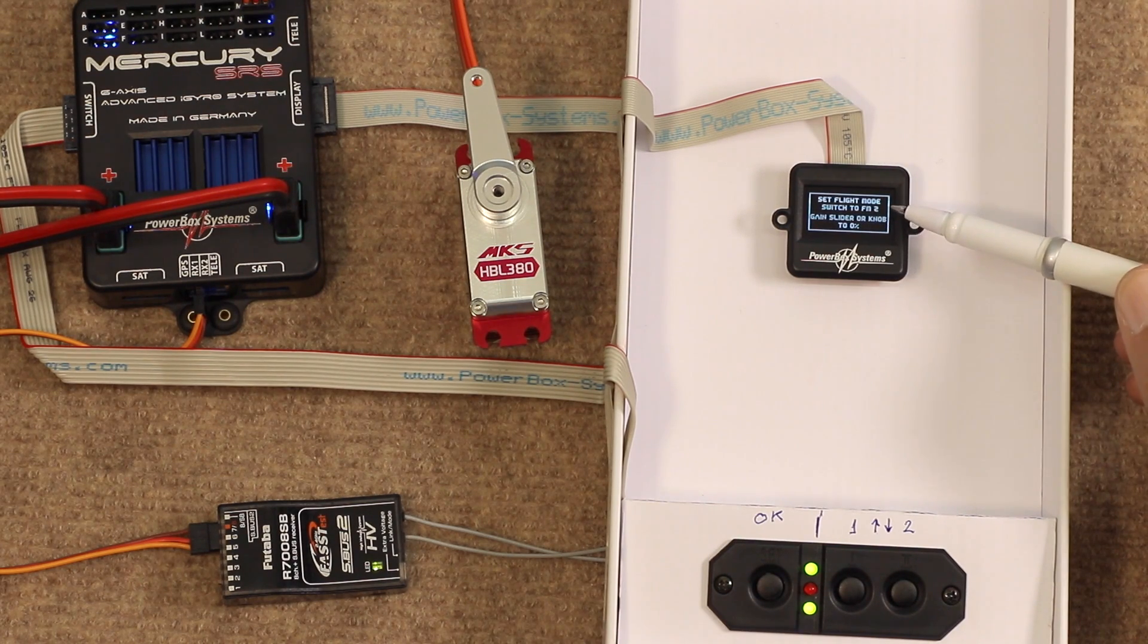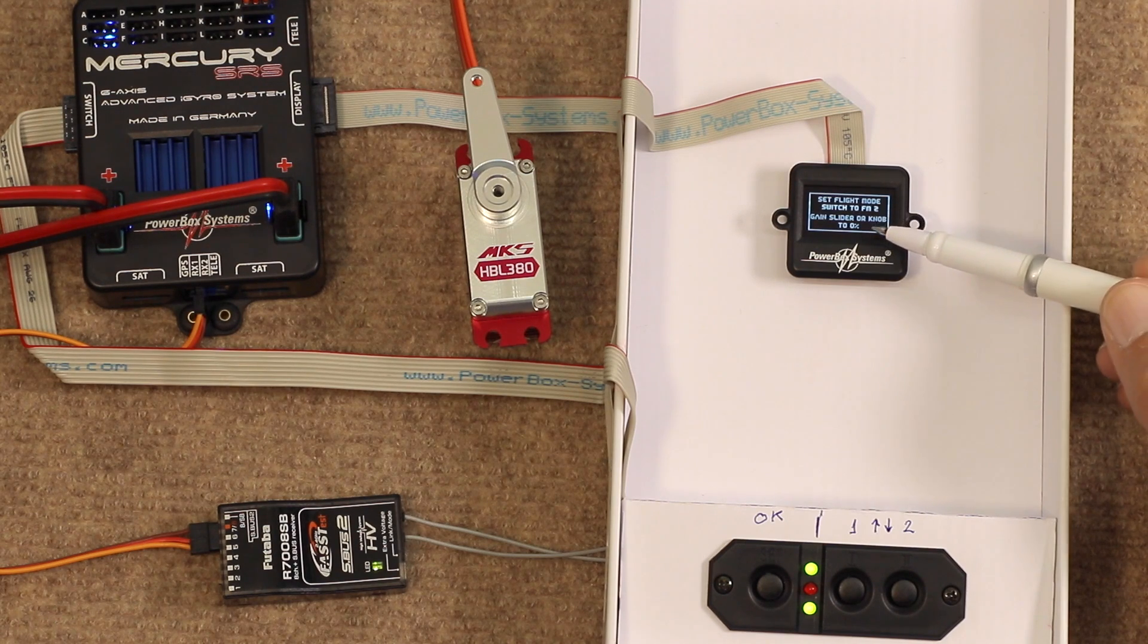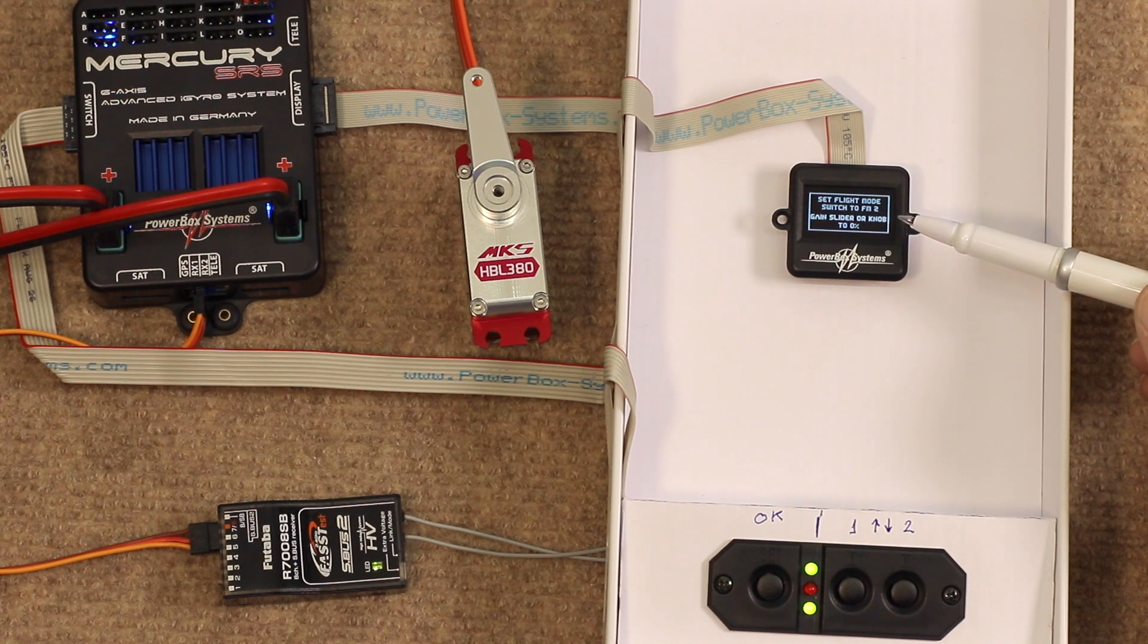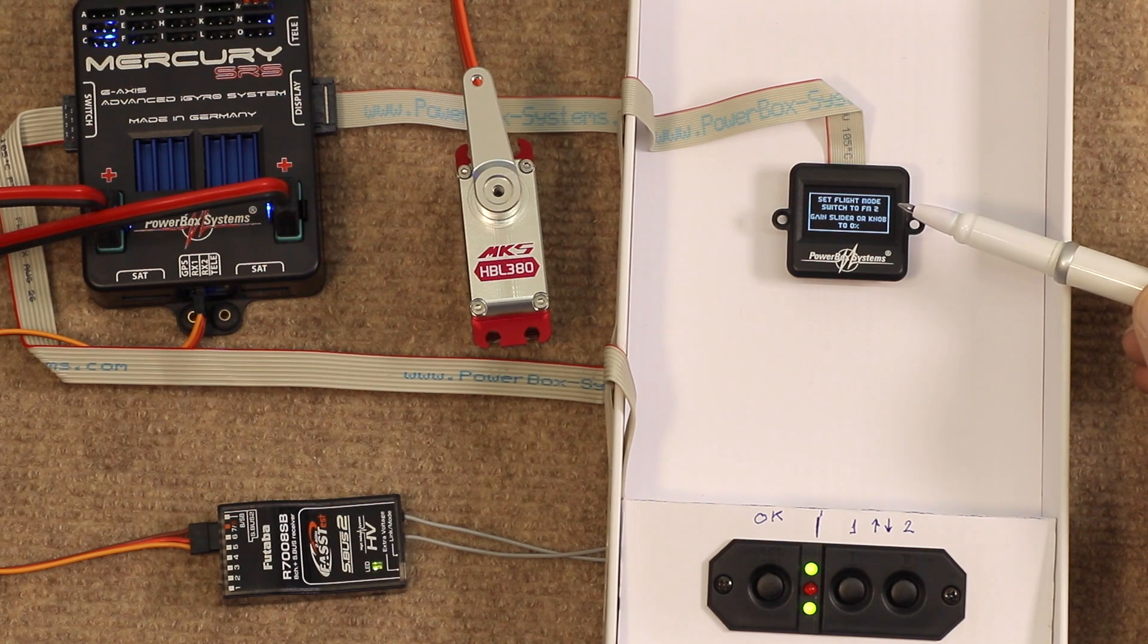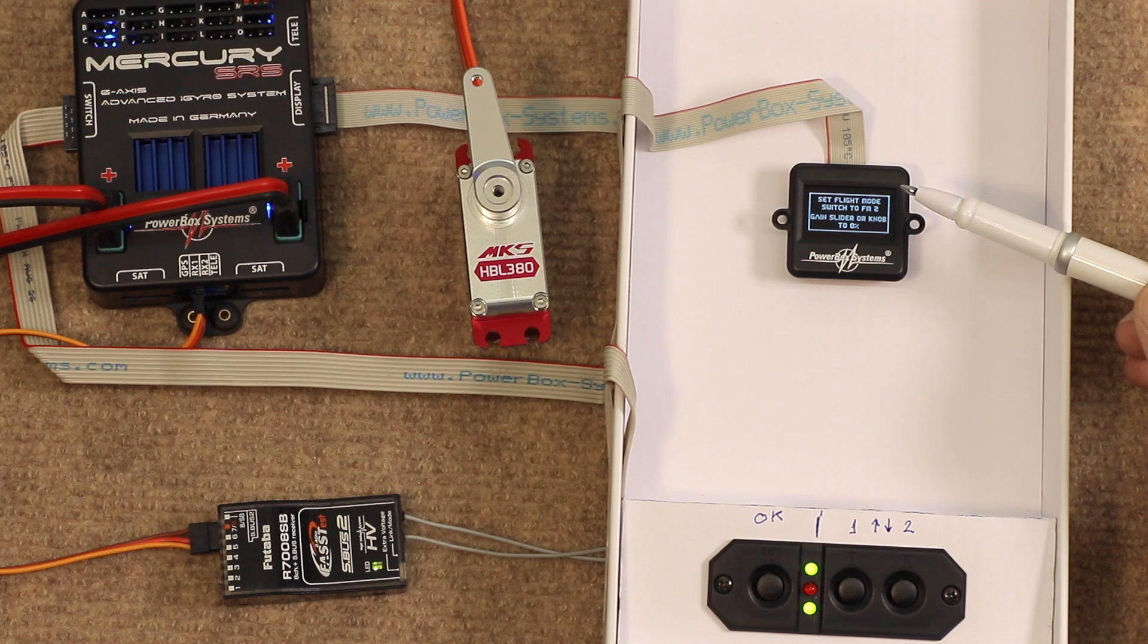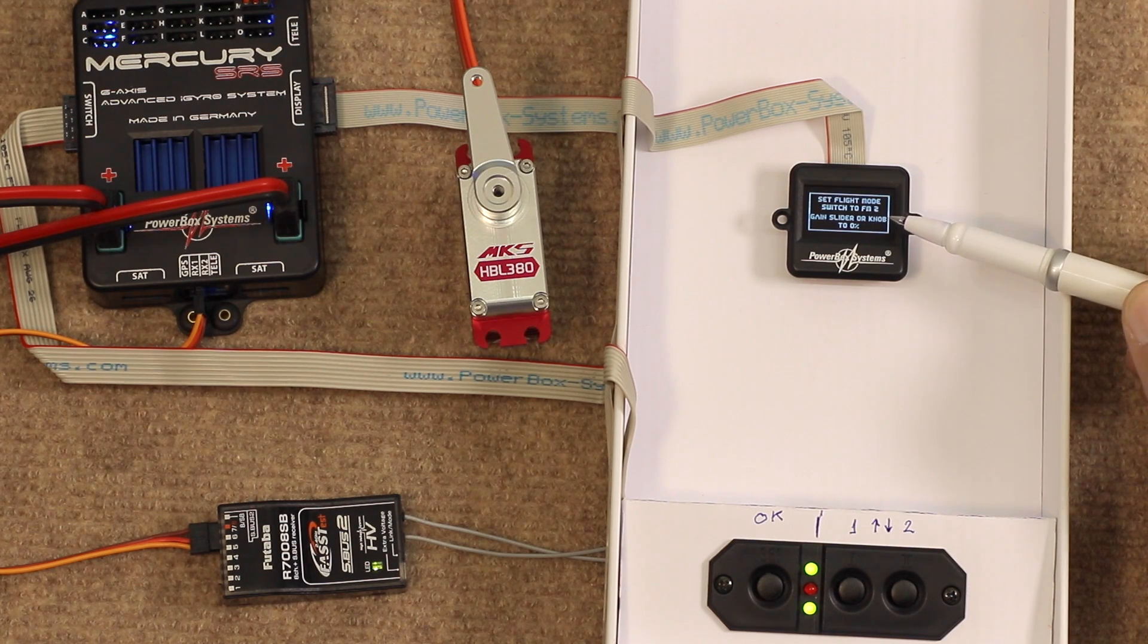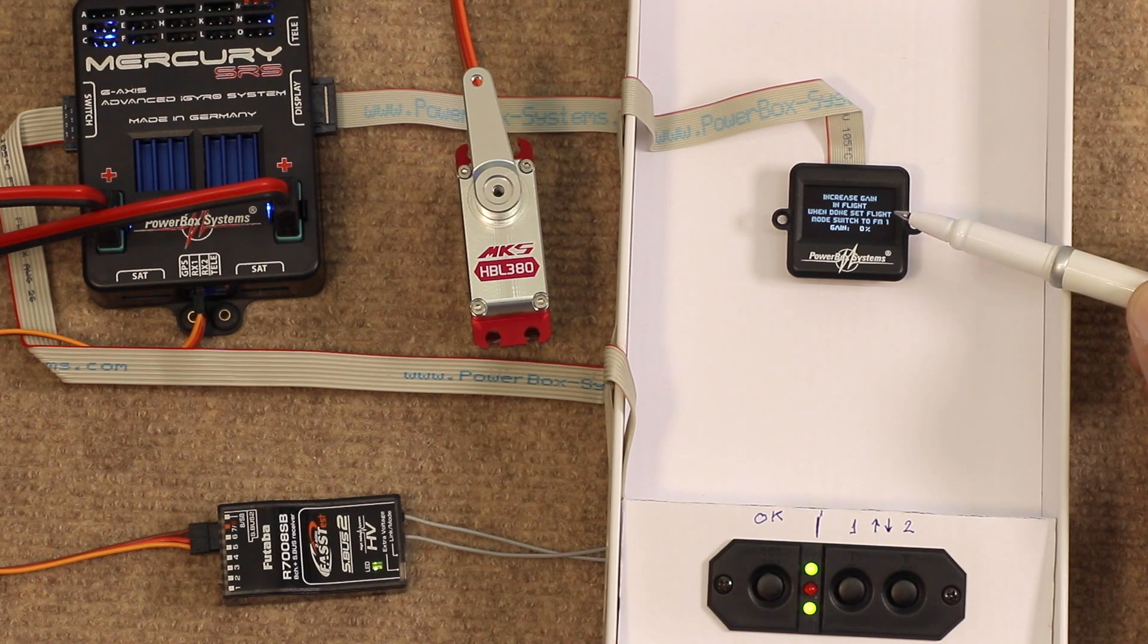It now asks us to set flight mode switch to FM2 and gain slider or knob to zero. So, we need to have the gyro gain slider set to zero. So zero gain. Starting off at zero, always a good idea. And then once we're ready to go, and in flight, we will set the flight mode switch to FM2. Like so.